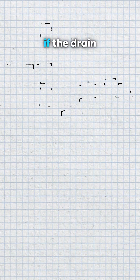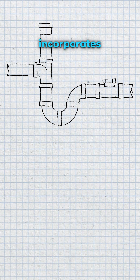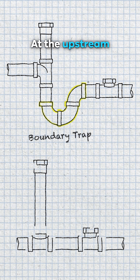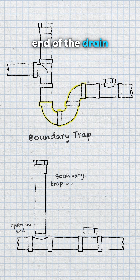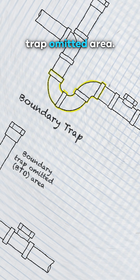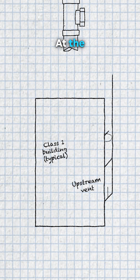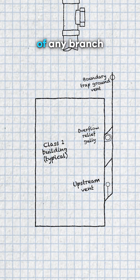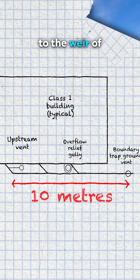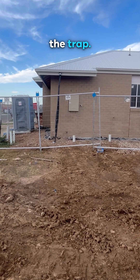A drain must have a vent located at both ends of the drain if the drain incorporates the boundary trap; at the upstream end of the drain if the drain is in the boundary trap omitted area; and at the upstream end of any branch drain that exceeds 10 metres from the vented drain to the rear of the trap.